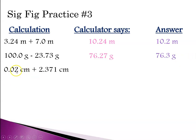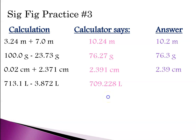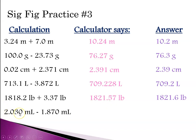In the next case, we have hundredths place versus thousandths place, so we round to the hundredths place — answer is 2.39. Here we have tenths place versus thousandths place, so we round to the tenths place — answer is 709.2. Next, tenths place versus hundredths place, rounding to the tenths place gives 1821.6. And finally, thousandths place versus thousandths place — the calculator gives hundredths, so we add in the thousandths place and the answer is 0.160.